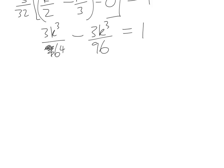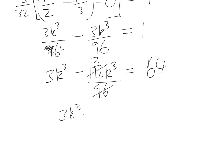If we multiply through by 64, we'll be left with 3k cubed minus 192k cubed over 96 equals 64. These two cancel to leave us with 2k cubed. So, we'll have 3k cubed minus 2k cubed equals 64, which means that k cubed is 64, so k is 4.